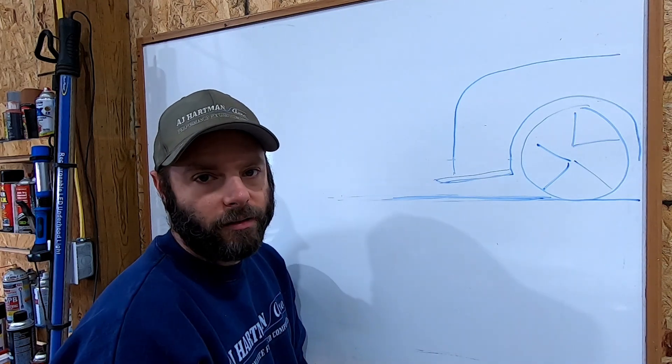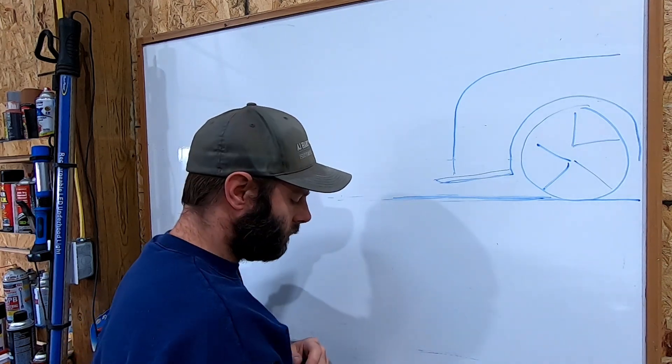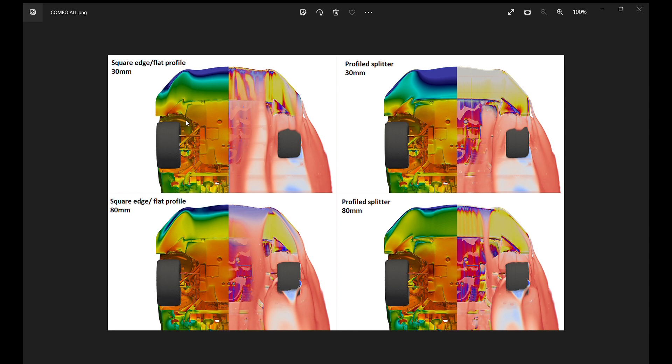All right so here we are with our CFD images. On the top left we have the square flat profiled splitter at 30 millimeters ride height and 80 millimeters ride height. On the right hand side is our profiled splitter at 30 millimeters and 80 millimeters. The first thing that will jump out is at 30 millimeters you can see how much more low pressure we have than the square flat splitter. We'll get into numbers in a little bit but that's the first thing that really jumps out at you, is the splitter blade itself under a low ride height.